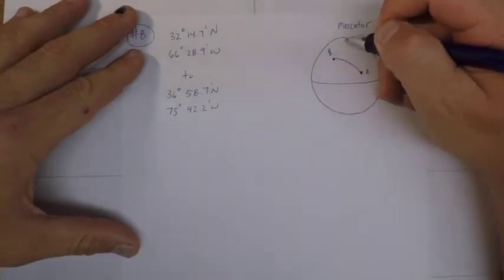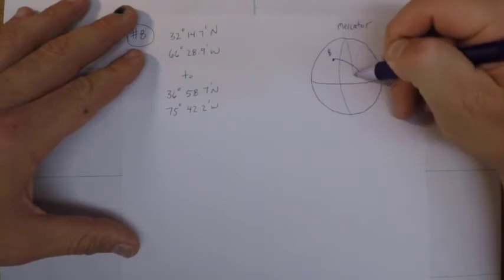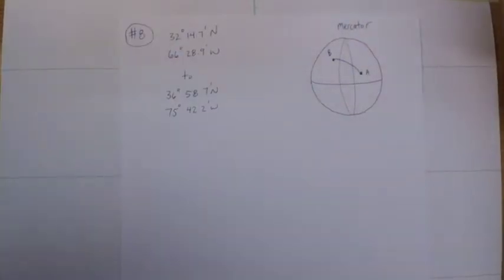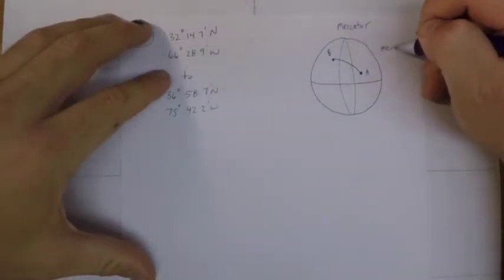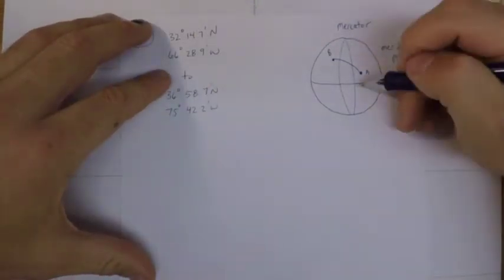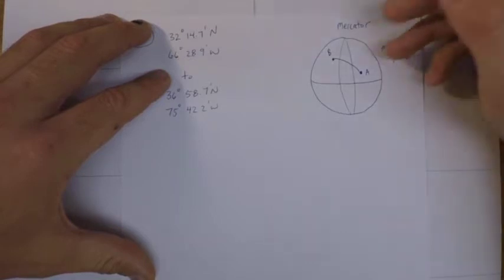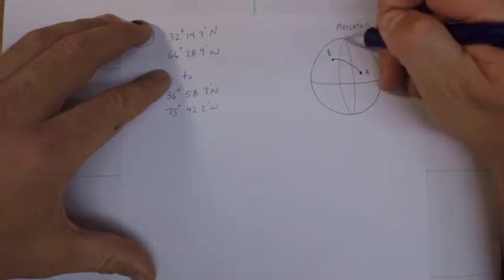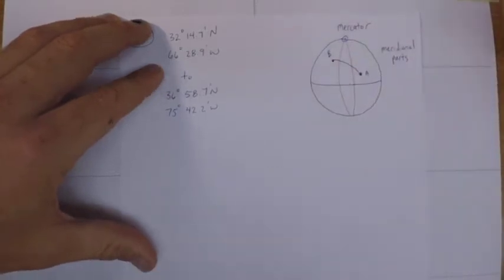So if you were to draw a couple of meridians in here, the key to Mercator sailing and how they construct Mercator charts is something called meridional parts. And so for a given latitude, how long is a distance of longitude in that case? So at the pole you can circle the earth in a few steps, but at the equator it would be maximized.